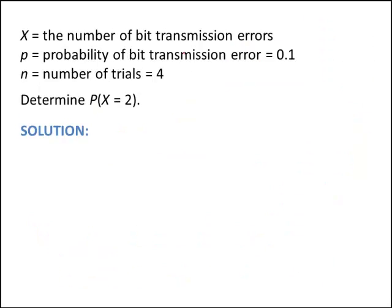So we were letting X be the number of bit transmission errors. P was the probability of success, which in this case is a bit transmission error, is 0.1 and staying constant. The number of trials, or the number of bits we're going to transmit, are 4. And each bit as it comes across, it's either an error or not an error, there's two choices. We're trying to determine the probability that the random variable X is 2, that there are two transmission errors. So maybe it's just as nice, instead of looking exactly at 2, that we build this guy's probability mass function, f of x for a binomial.